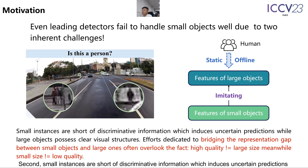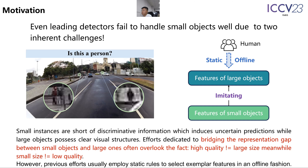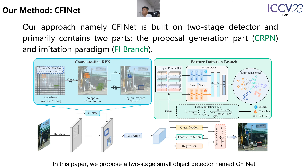Second, small instances are short of discriminative information, which induces uncertain predictions, while large objects possess clear visual structures. This enlightens researchers to bridge their representation gaps by imitation learning. However, previous efforts usually employ static rules to select exemplar features in an offline fashion.